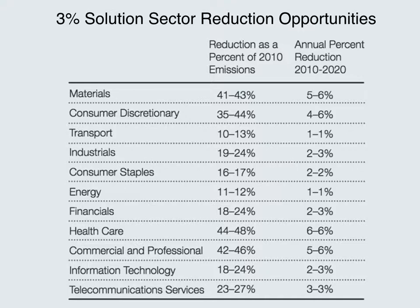It's worth noting that McKinsey and Company have a long history working in this area. Its greenhouse gas abatement cost curve, which was published in 2009, was a real breakthrough in helping companies see that carbon reduction could be a profit center if it was done properly.